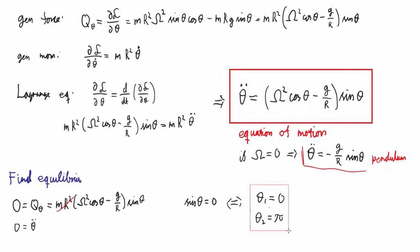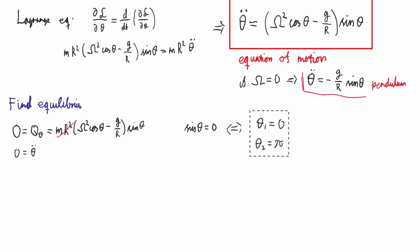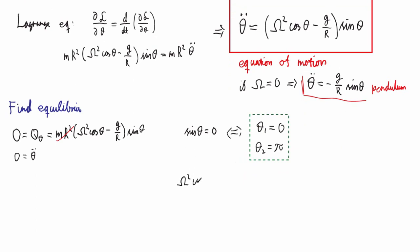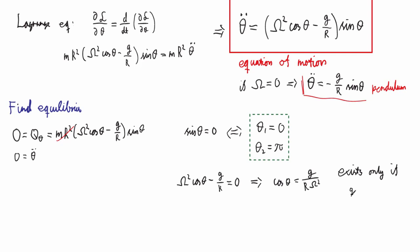Those are two possible solutions. Then the other factor gives us: omega-squared * cosine(theta) minus g over r equals zero, which means cosine(theta) equals g over (R*omega-squared). That's only possible if this term is less than or equal to one, since cosine can never exceed one. So this solution exists only if omega is less than or equal to the square root of G over R.